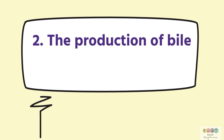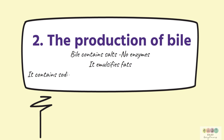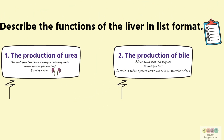Number two is the production of bile. Bile contains salts but does not contain enzymes. It emulsifies fats and contains sodium hydrogen carbonate, which acts in neutralising the acidic chyme.